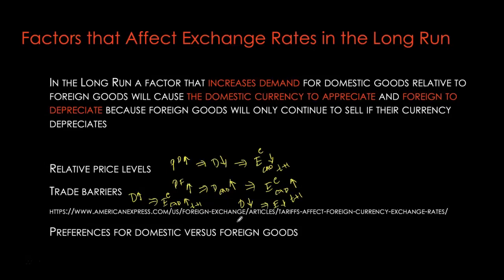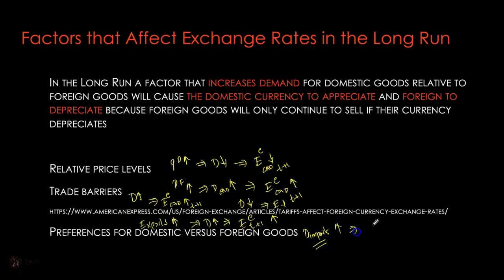Next, we have preferences for domestic goods versus foreign goods. If preferences change and foreigners prefer domestically produced goods — made-in-Canada goods — that means our exports are rising relative to our imports. The rise in demand for our domestically produced traded goods causes demand for those goods to go up, and the Canadian dollar is expected to appreciate. If on the other hand there is a preference for foreign goods relative to domestically produced goods, demand for imports goes up, and this is going to cause the currency to depreciate in the long run.